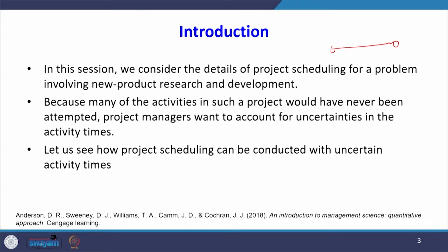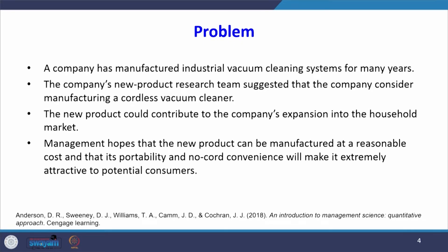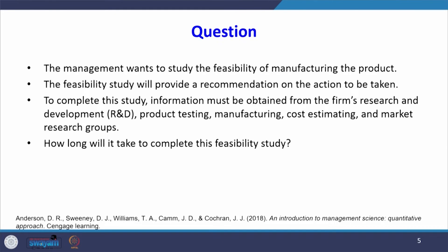Let us see how project scheduling can be conducted with uncertain activity times. The problem for this session: a company has manufactured industrial vacuum cleaning systems for many years. The company's new product research team suggested that the company consider manufacturing a cordless vacuum cleaner without wire. The new product could contribute to the company's expansion into the household market.